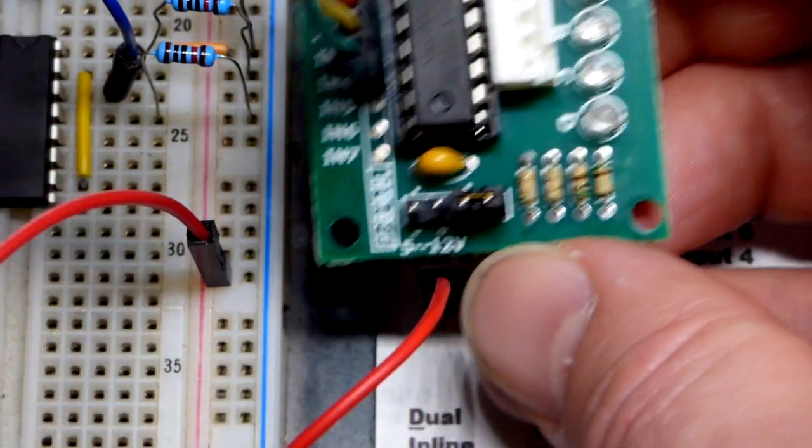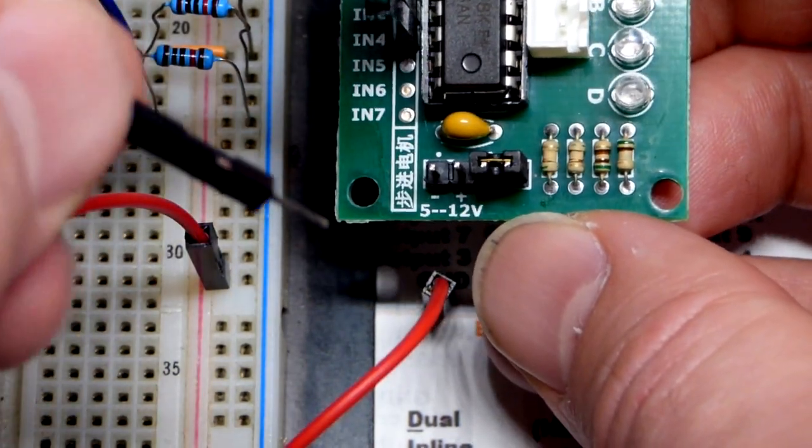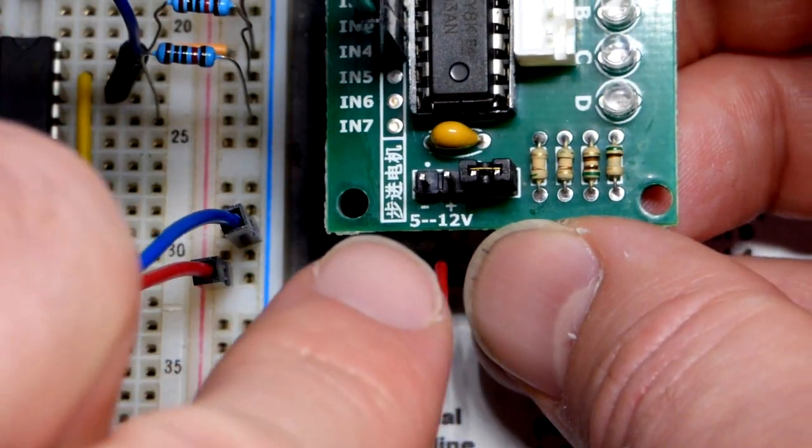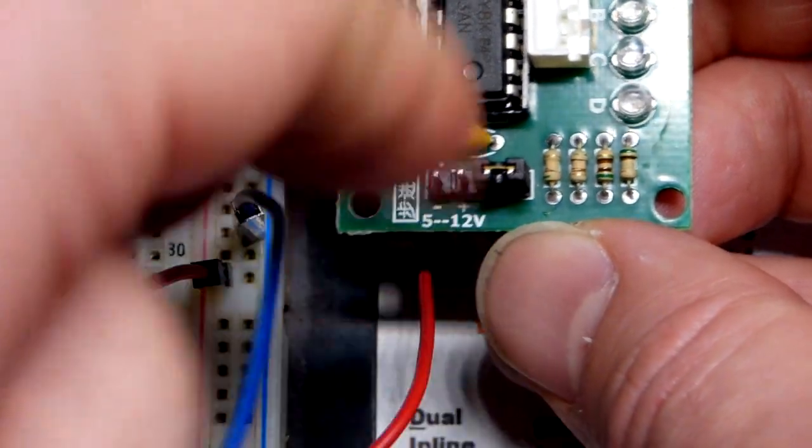And now we need to power the relay module, which powers the stepper motor. We have the male end of the jumper there, and then female over here. So we're going to use 5 volts, so we leave those two pins exposed. We have that jumper covering the 12-volt spot.